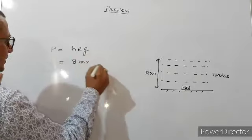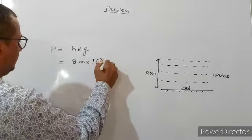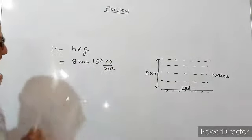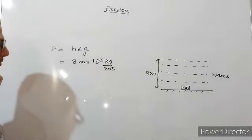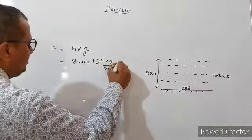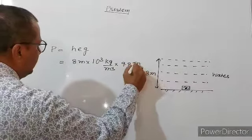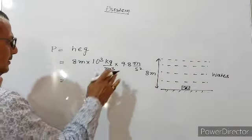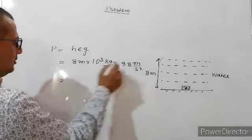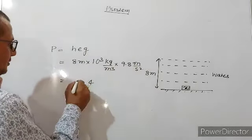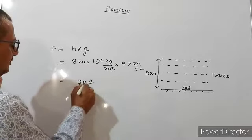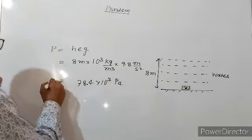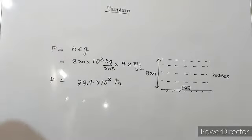Pressure equals H rho g: height of liquid column 8 meters, density of liquid — density of water — that is 10 to the power 3 kilogram per meter cube, which is 1000 kilogram per meter cube or 1 gram per centimeter cube. Putting it together, we get 78.4 into 10 to the power 3 Pascal. This is the pressure you can find. That was question number 1.